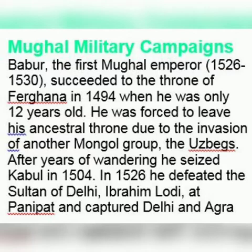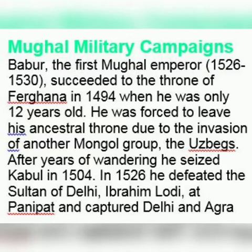Babur was the first Mughal emperor to establish the Mughal Empire in India. Babur was born in 1483 CE. His original name was Zahir-ud-Din Muhammad Babur, and he was a descendant of Timur and Genghis Khan. By the age of 21, Babur had conquered Kabul and began to look towards India.